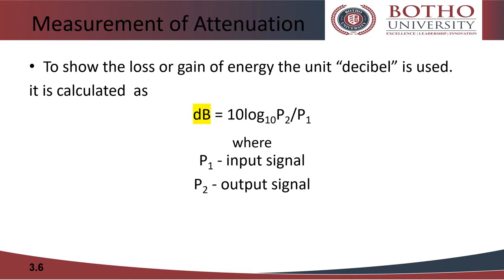To show the loss or gain of energy, the unit decibel is used. The decibel measures the relative strength of two signals or one signal at two different points. The decibel is positive if signal is strengthened and it is negative when signal attenuates.